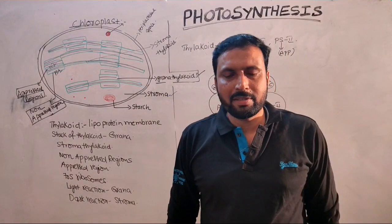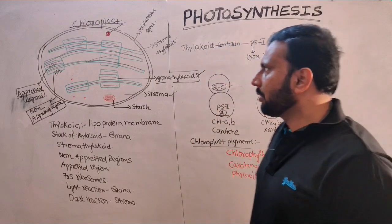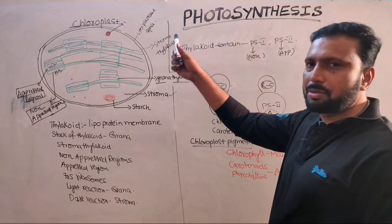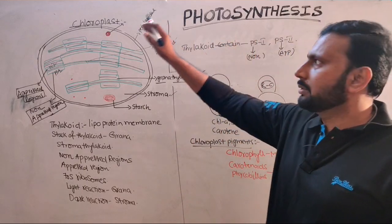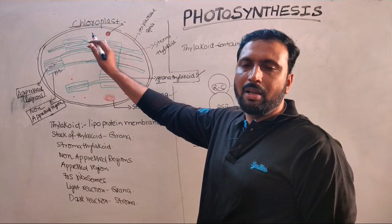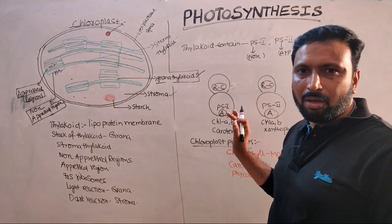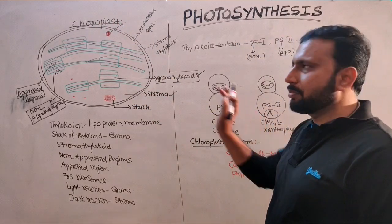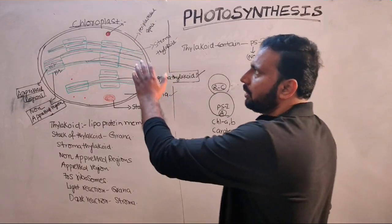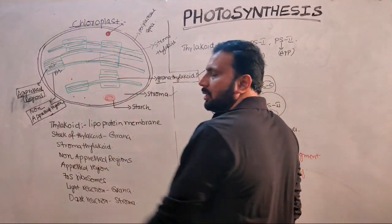Hello, good morning. I am B.S.R. Botkin, Lecturer. Today our topic is photosynthesis part 2 — chloroplast structure and their pigments. What are the pigments present in the chloroplast? So we are going directly to the structure of the chloroplast.